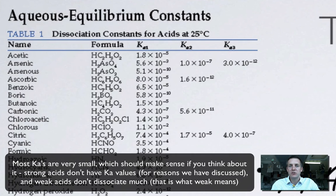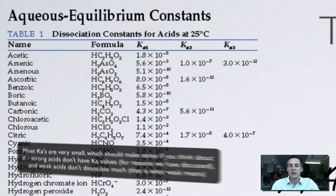So the bigger Ka is, the stronger the acid is, the smaller it is, the weaker it is. But remember that strong acids don't really have Ka values, because they basically ionize completely.